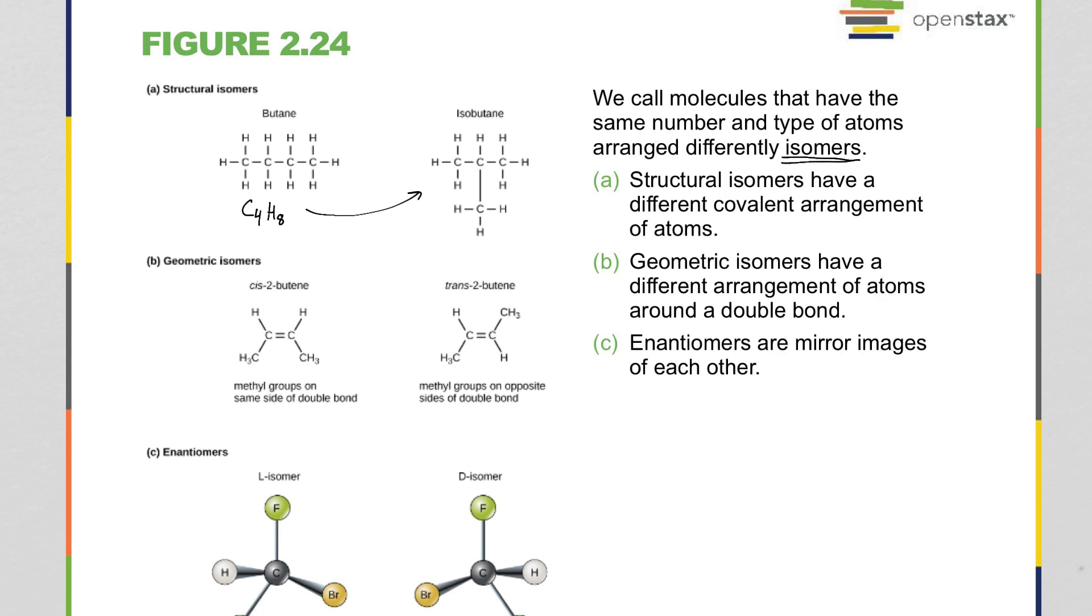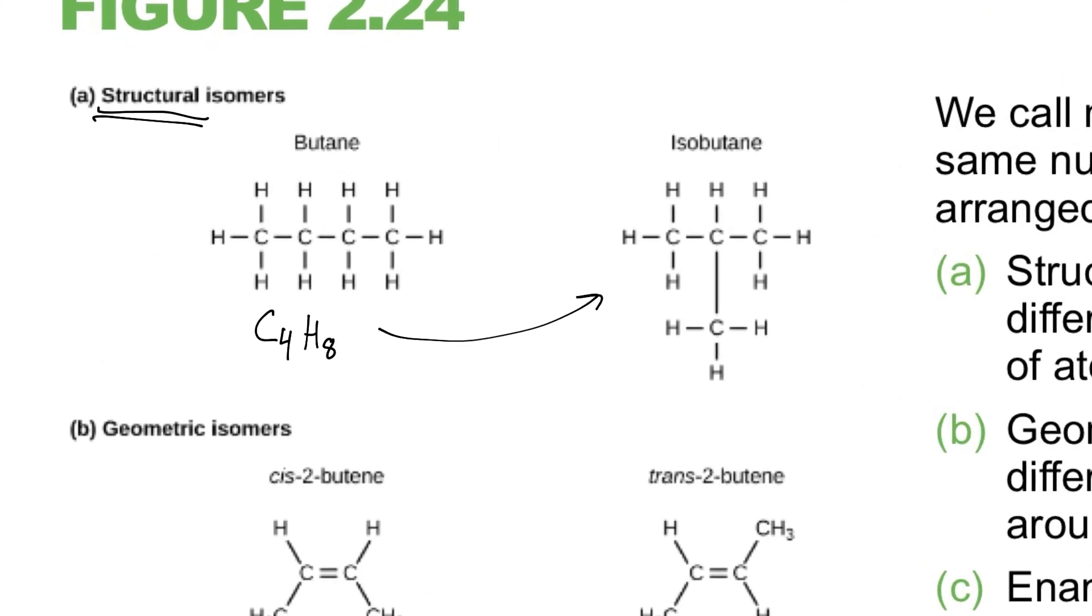So structural isomers, exactly like it sounds, the structure or the arrangement of bonds is what's different. In this butane molecule, all the carbons are arranged in a nice linear chain, and the hydrogens come off of them in about the most simple conformation you could imagine.